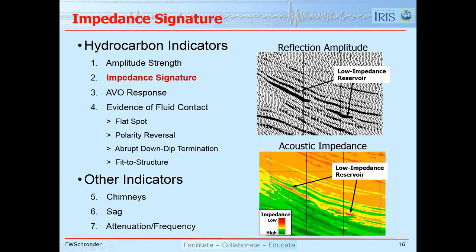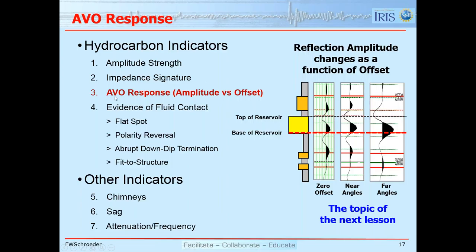Amplitude versus offset (AVO) will be covered in the next lesson on Thursday. Briefly, looking at the zero-offset response gives a moderate trough followed by a moderate peak. Splitting into near-angle stack and far-angle stack, you go from a moderate to a really strong trough at the top, and from a moderate to a very strong peak at the base. How amplitude varies as a function of offset — or more precisely reflection angle — can tell us something about the type of fluid in a particular reservoir.